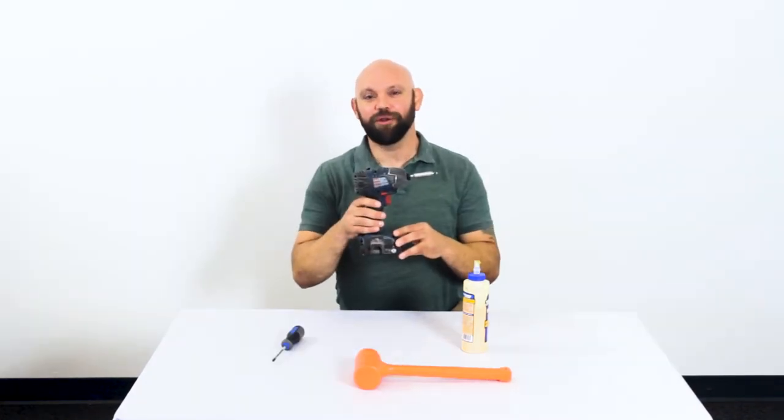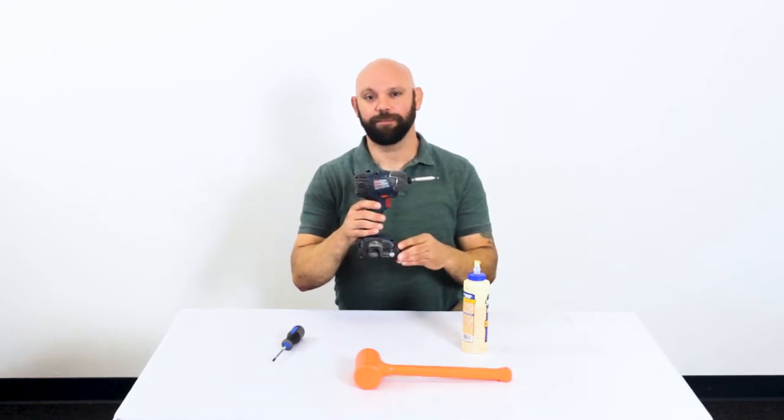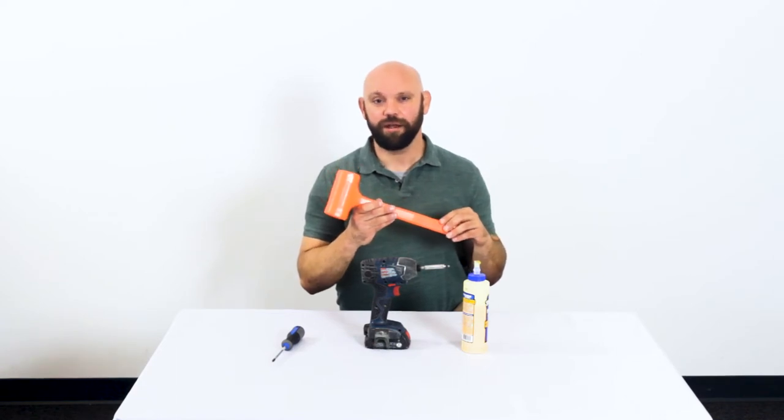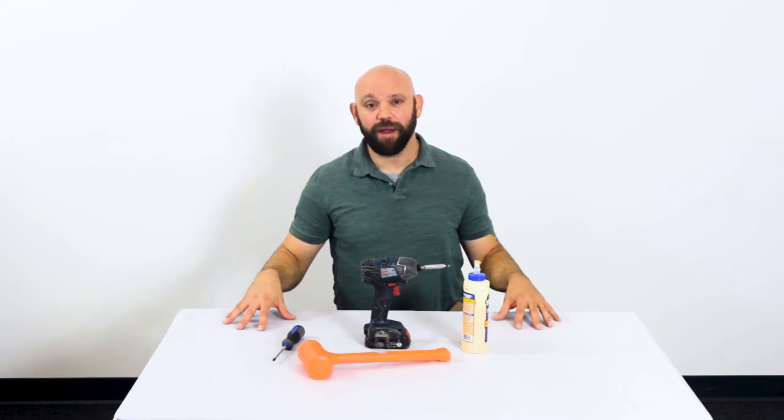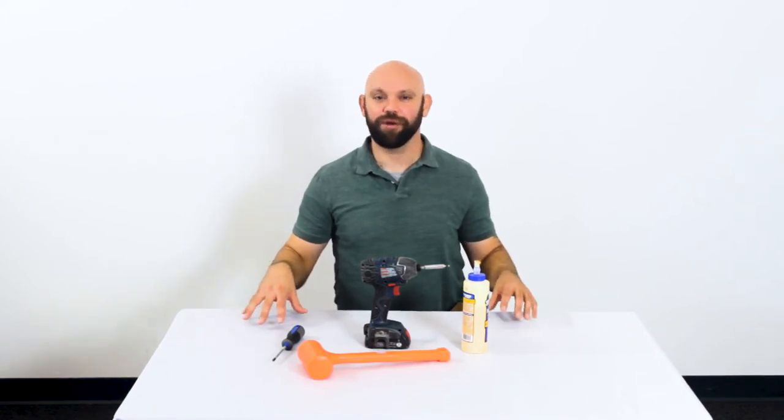A drill gun with a number two Phillips bit on it. A magnetic tip is recommended but not necessary. A rubber hammer to help set the cabinet as needed during the assembly process. We also recommend laying down a cloth or cardboard during the assembly process to keep your cabinet damage free.